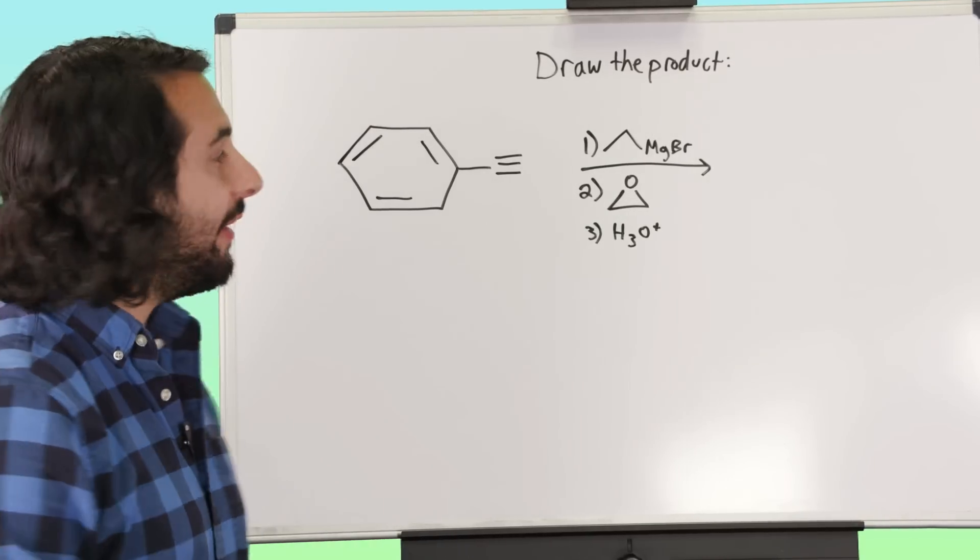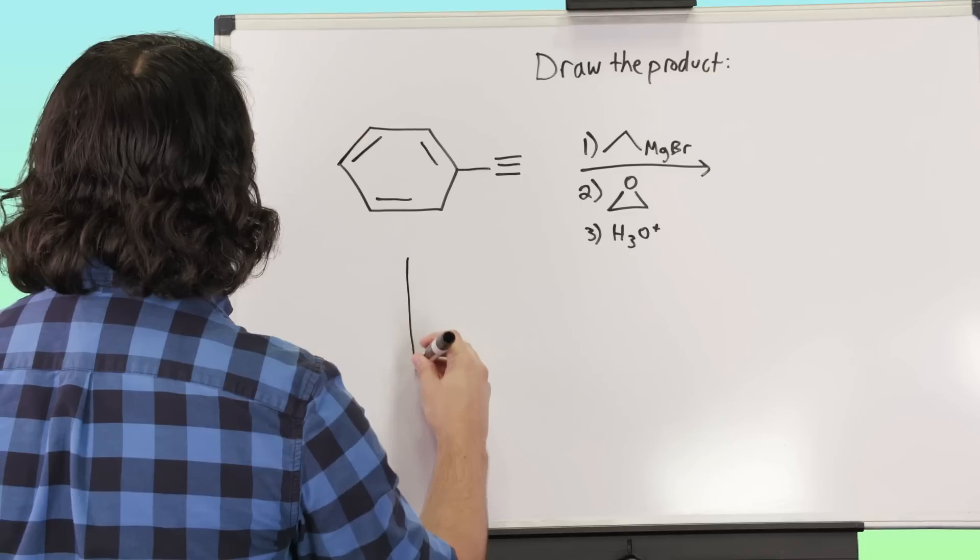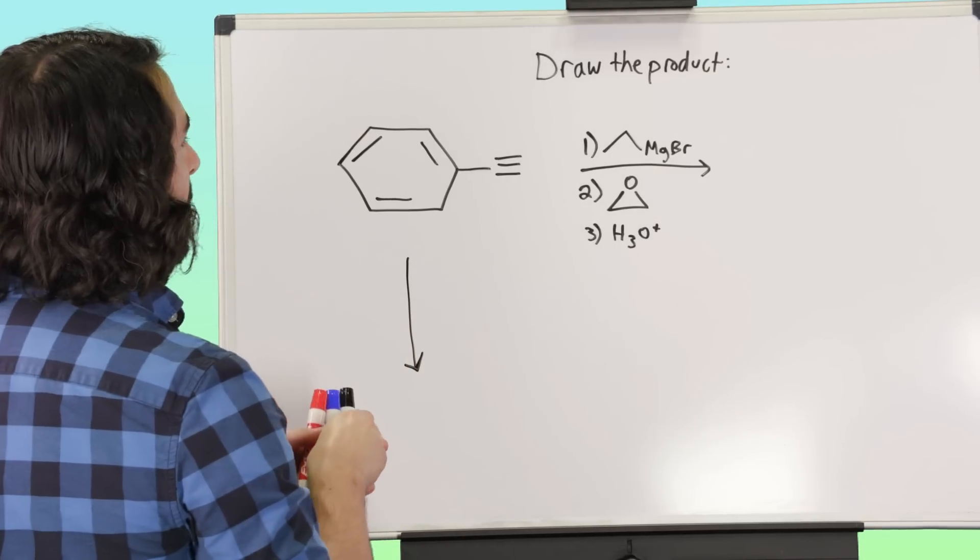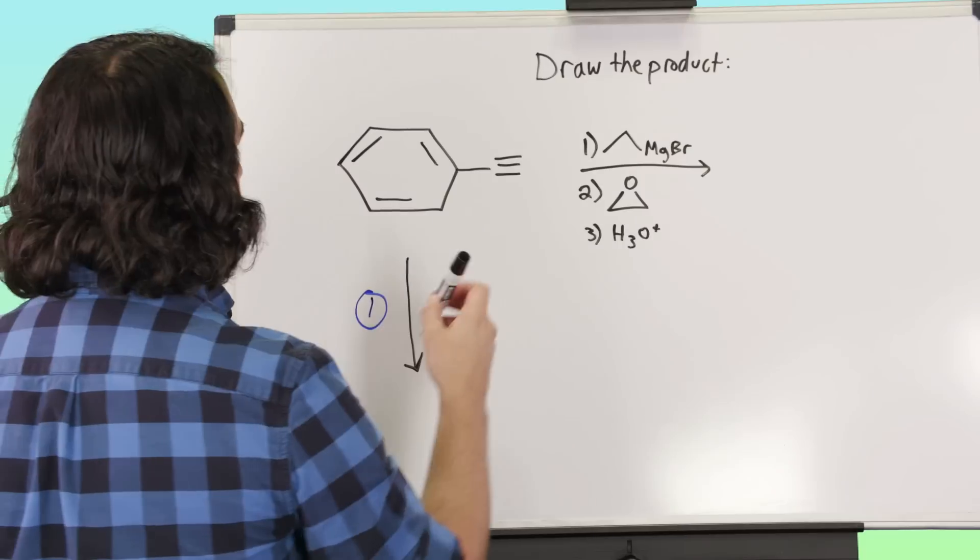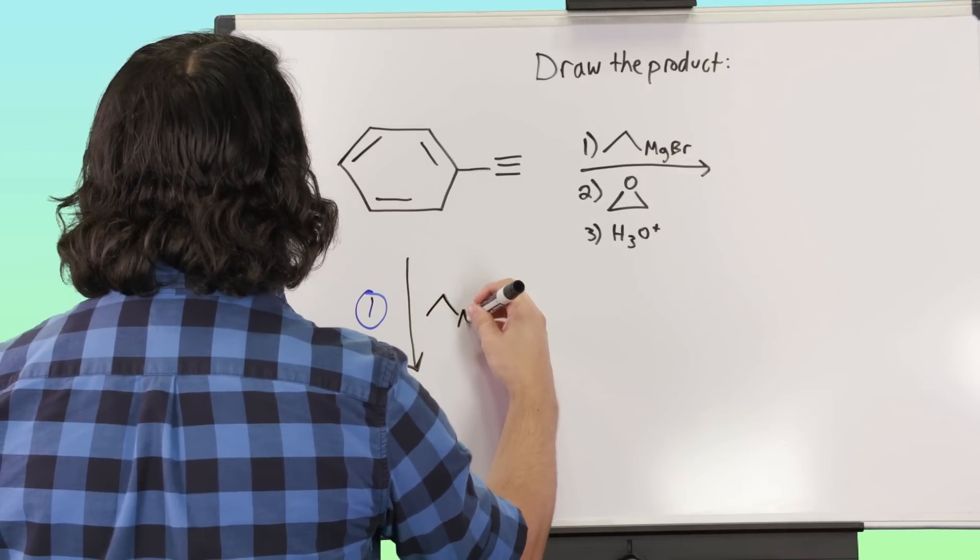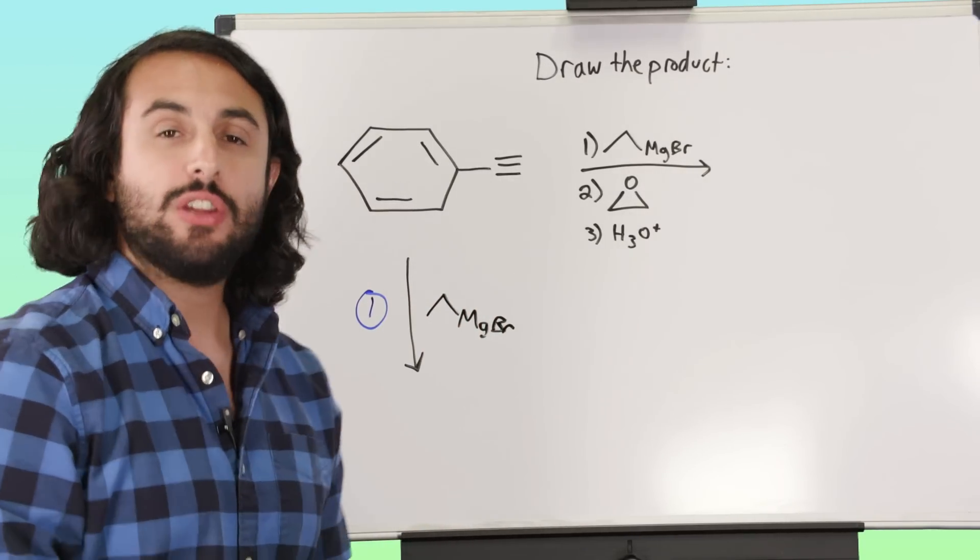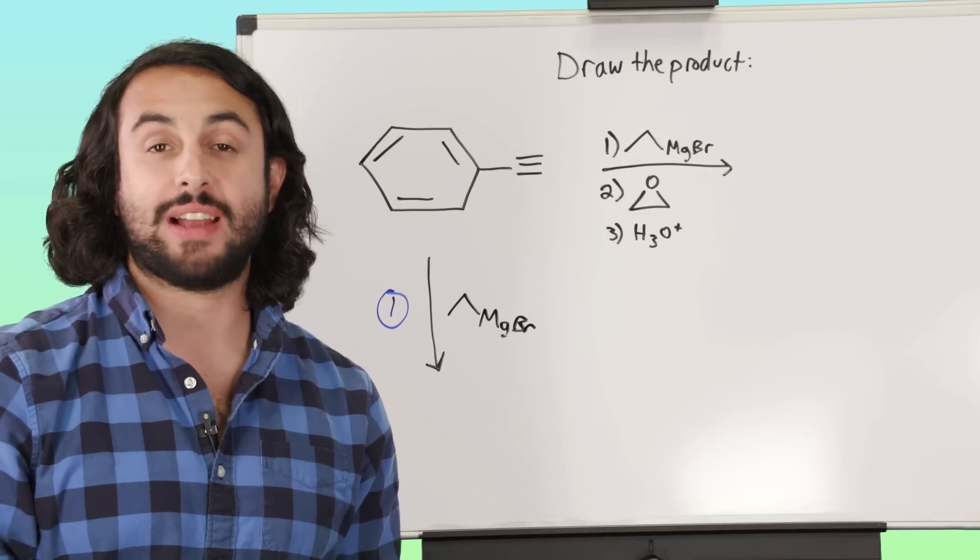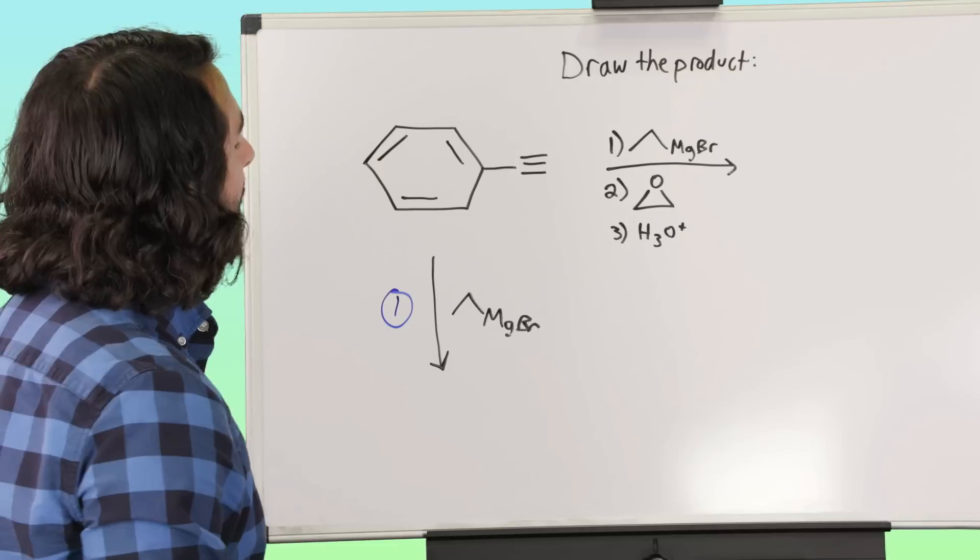So let's take a look at this. For the first reaction, immediately we might be a little bit confused at first, because we are seeing clearly a Grignard reagent. We know that we are going to be reacting this substrate with a Grignard reagent, but the thing is we know that usually Grignard reagents are going to attack carbonyl containing compounds, and we don't see any carbonyl containing compounds here.